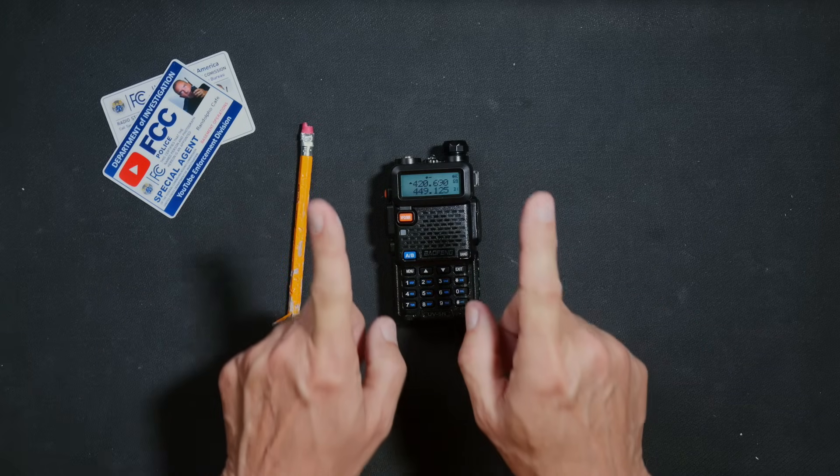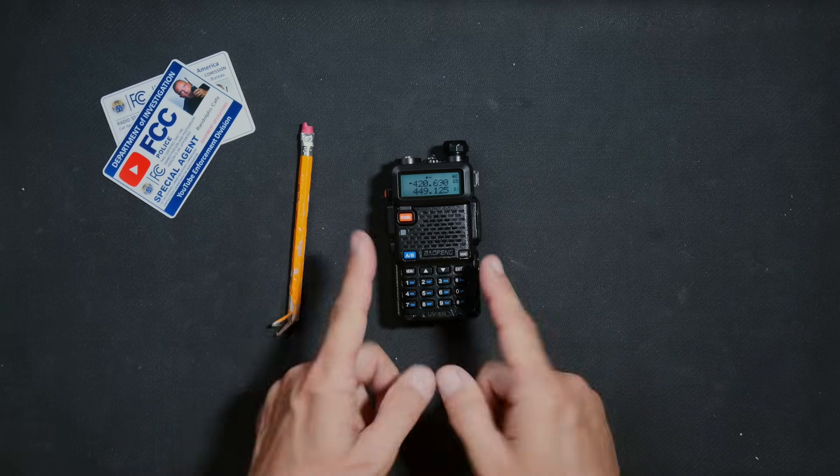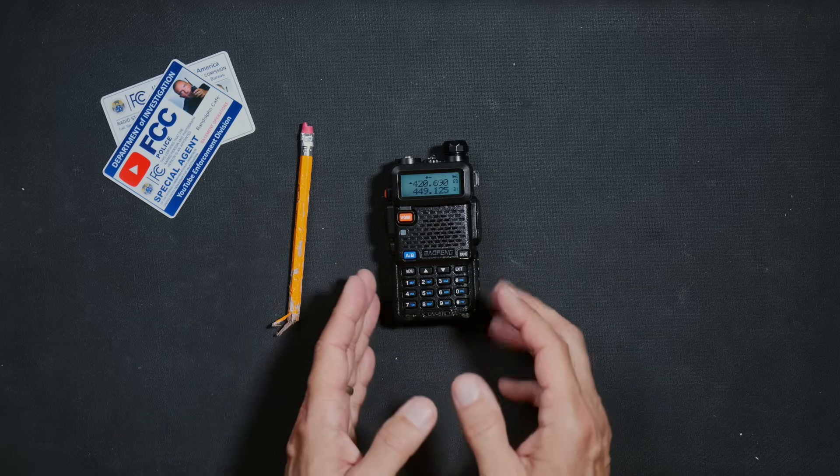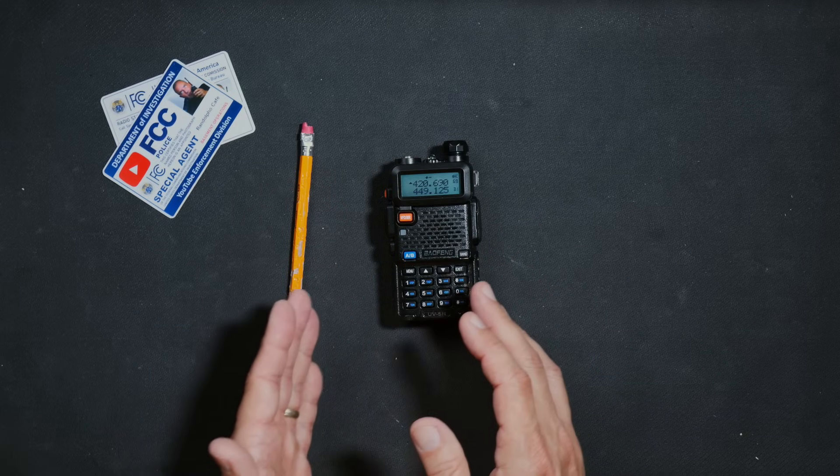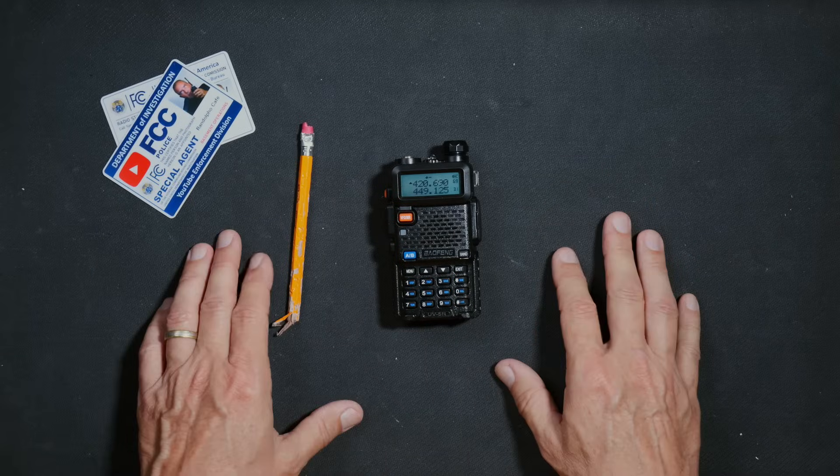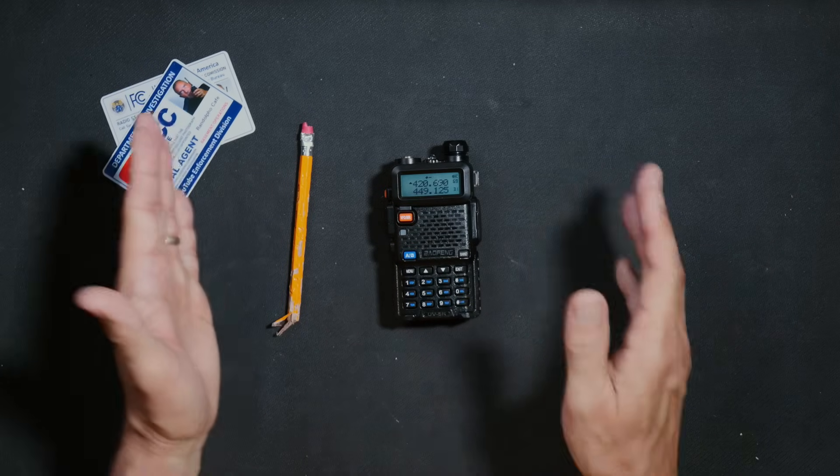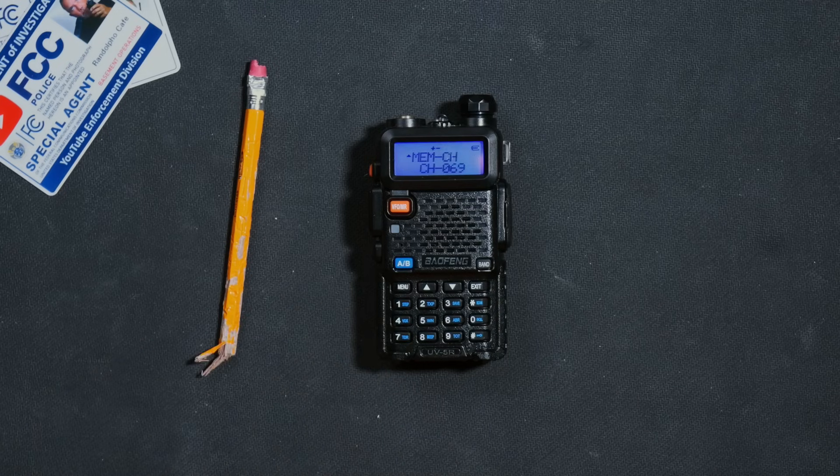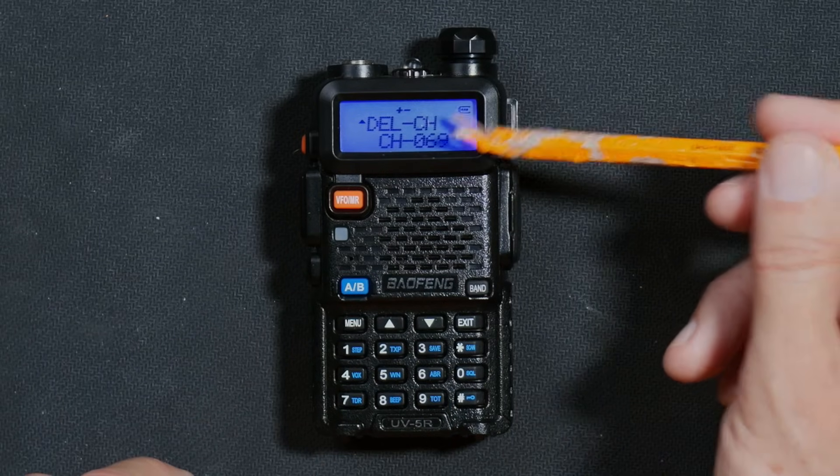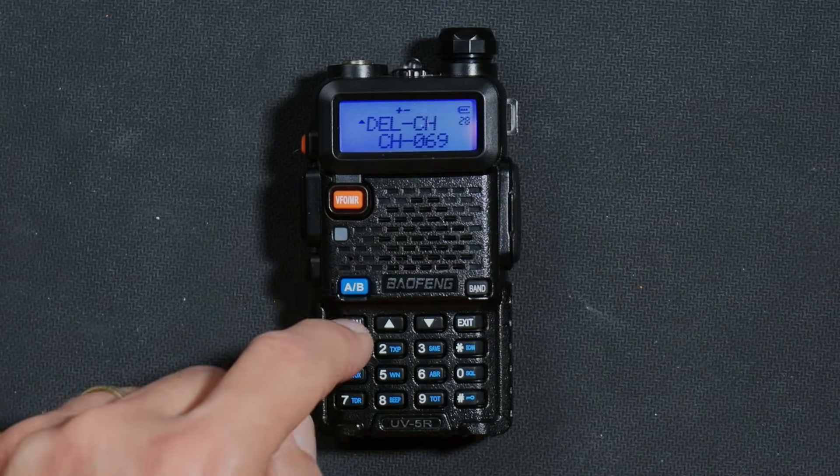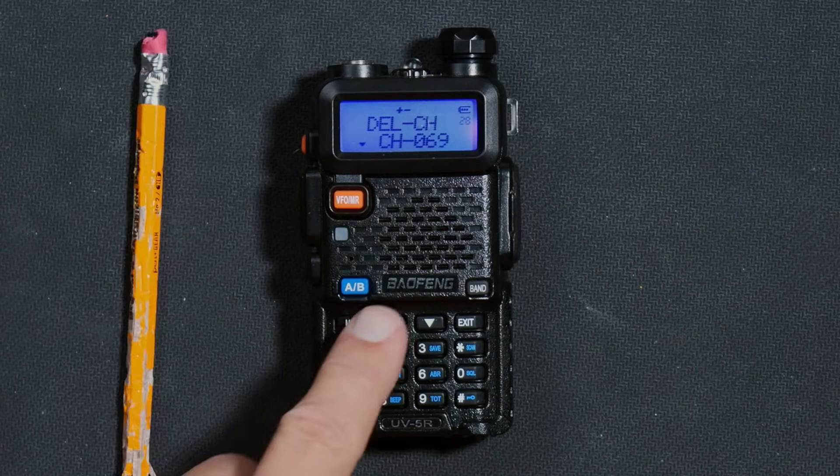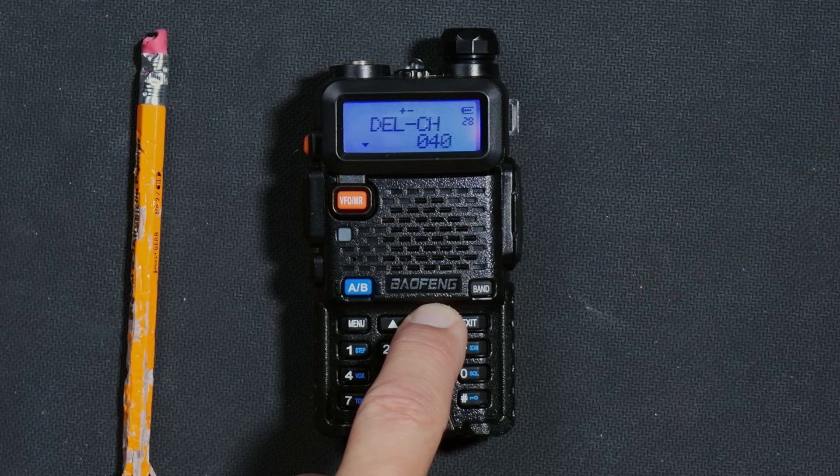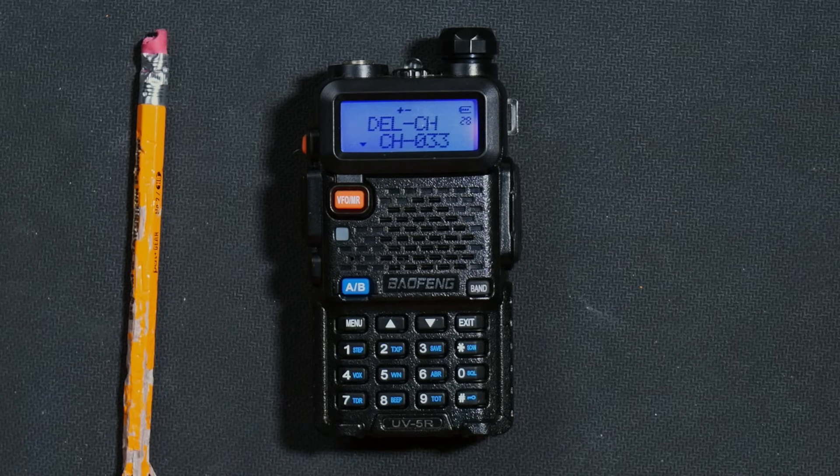And now you are done. However, if the channel number that you wanted to use was in use, as indicated by the CH in front of the channel number, but you want to use that channel number anyway, you can delete or clear out whatever was on that channel by going to menu, finding the delete channel option, crushing the menu button again, then scroll through to find the channel that you wish to delete, and then very aggressively crush the menu button one more time.